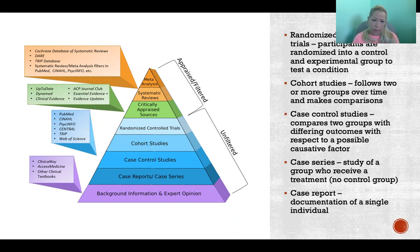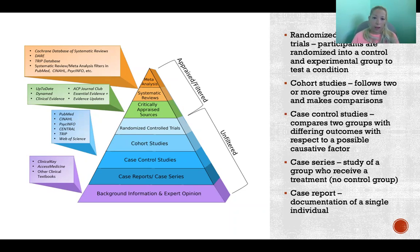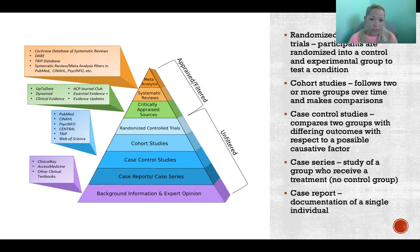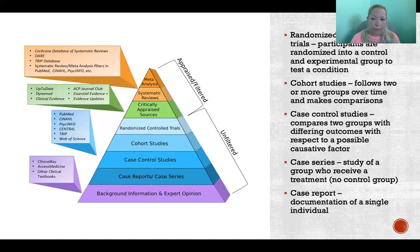Below that would be cohort studies — a study that follows two or more groups over time and makes comparisons. The groups are not randomized. The way those groups came to be could vary: they might be self-selecting or formed in different ways, but they would not be randomized like in a randomized controlled trial.